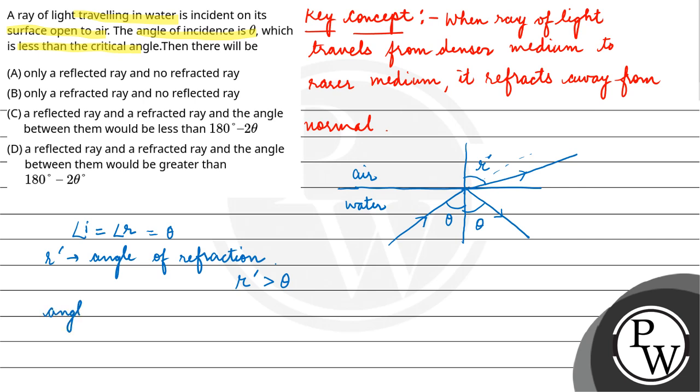Angle between reflected ray and refracted ray, let's say this angle is phi. So phi will be equal to the full angle that would be 180 degree linear angle. So phi will be equal to 180 minus r dash plus theta.